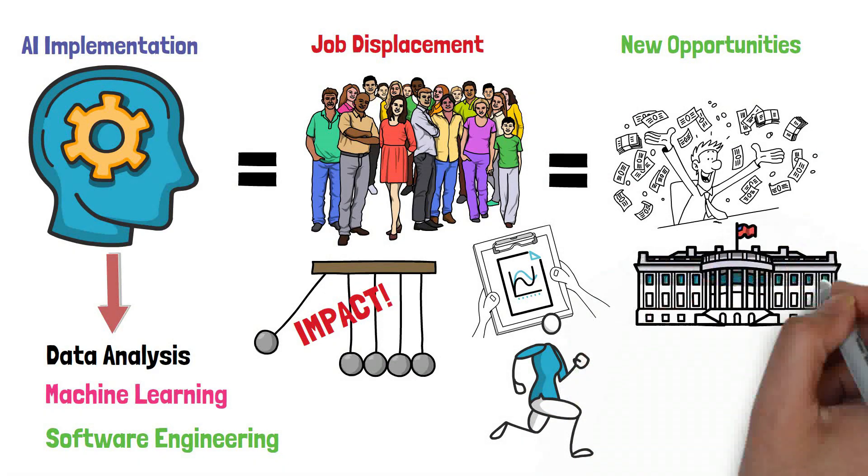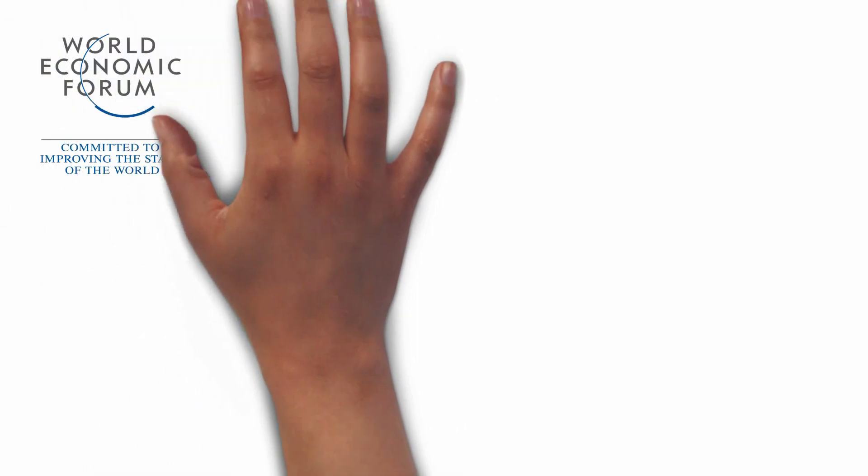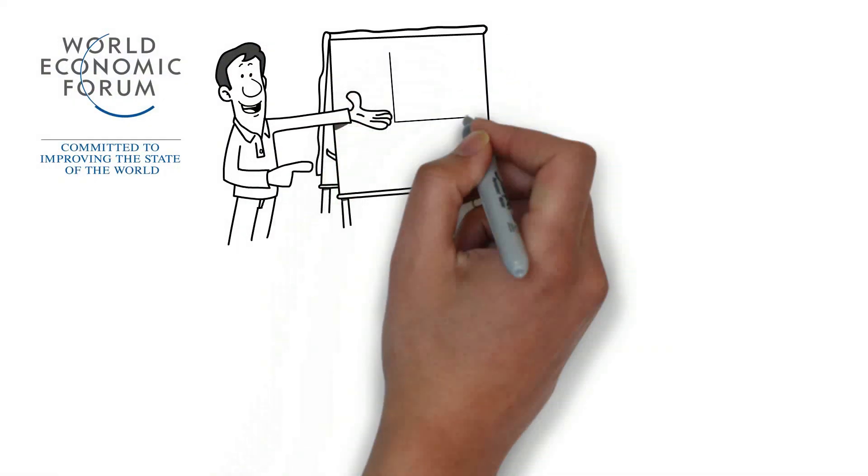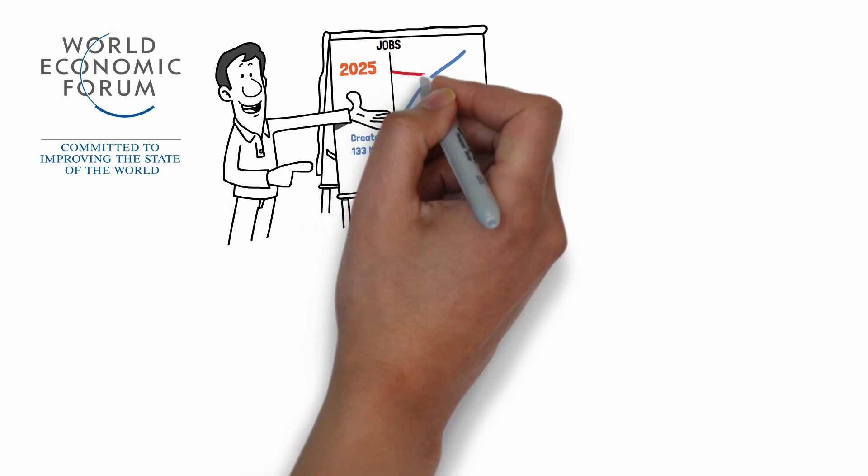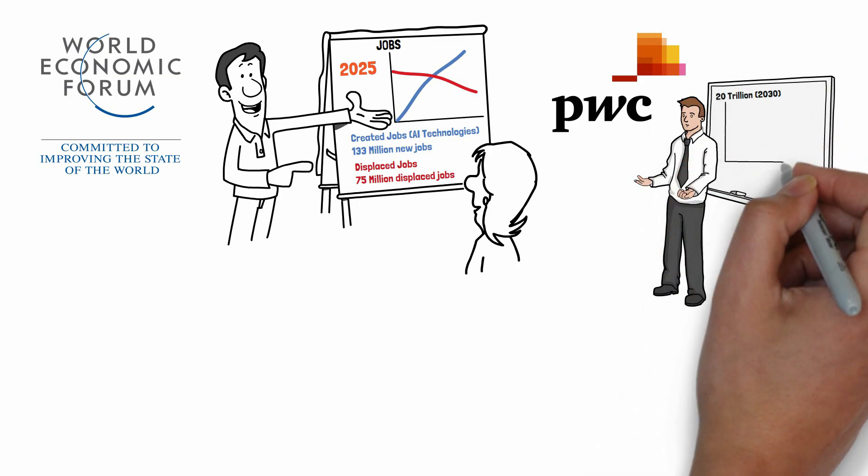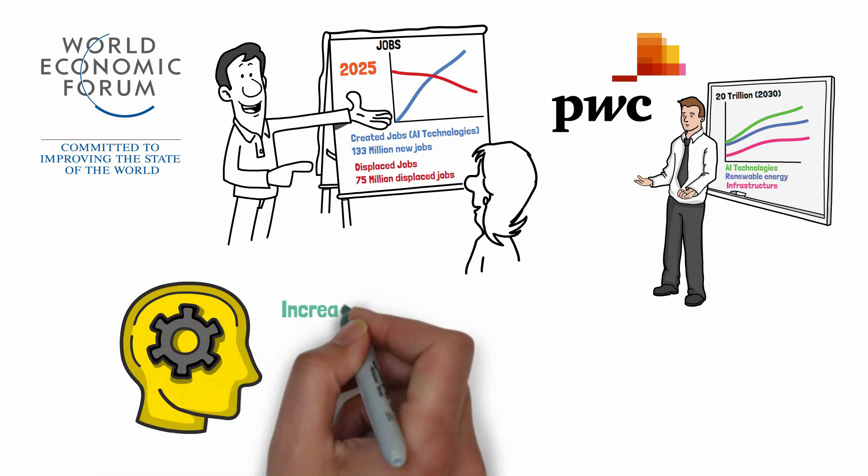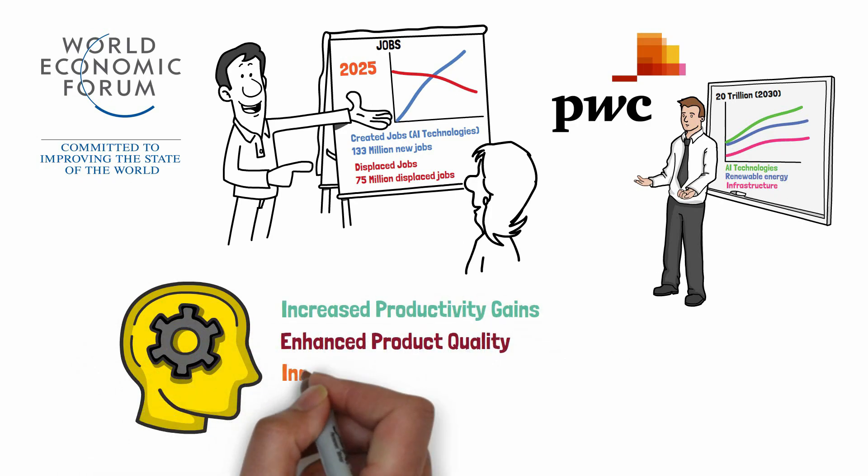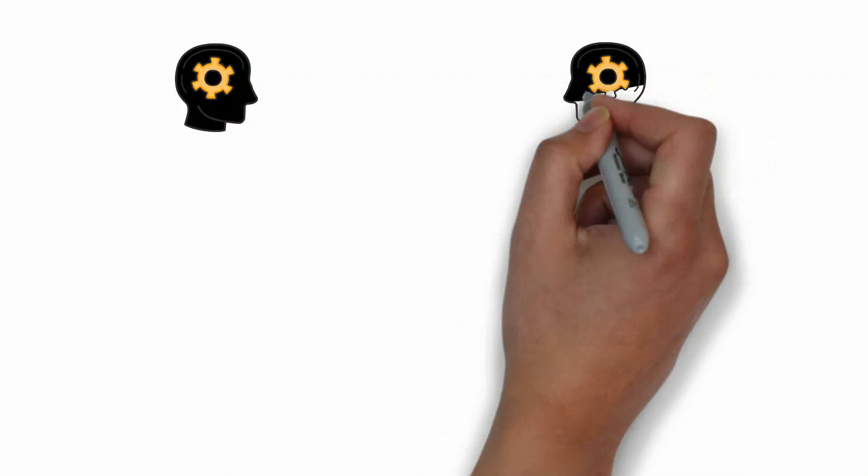Another report by the World Economic Forum suggests that by 2025, AI and related technologies could create around 133 million new jobs globally, while also displacing around 75 million jobs. According to a report by PwC, it is estimated that AI will contribute around 15.7 trillion dollars to the global economy by 2030, with a significant portion of this growth coming from increased productivity gains, enhanced product quality and innovation, and new consumer experiences and services.